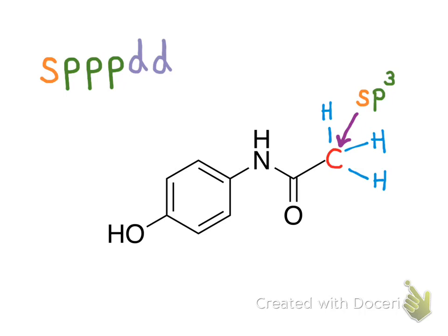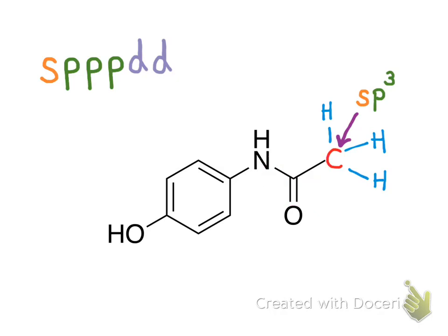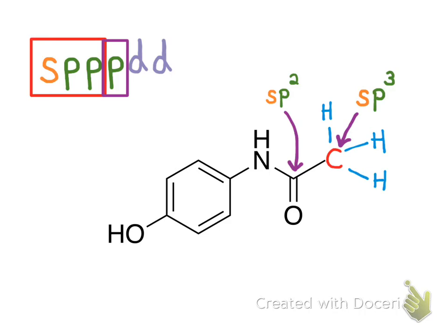Next, let's look at this carbon. It has three electron domains: one for a single bond, one for a double bond, and one for another single bond — so two single bonds and one double bond, each counting as one electron domain, for a total of three. Since there are three electron domains, we count over three and get sp2 hybridized. If it's sp2 hybridized, that means it still has one unhybridized p orbital, and that p orbital is what allows it to form a double bond.